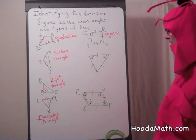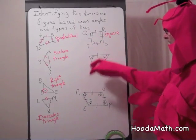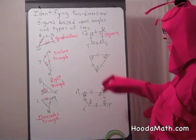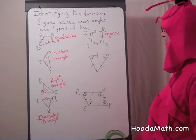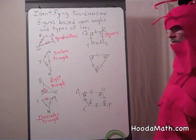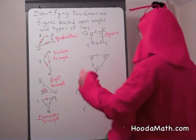This is a triangle that has equal sides and equal angles. It's called an equilateral triangle.